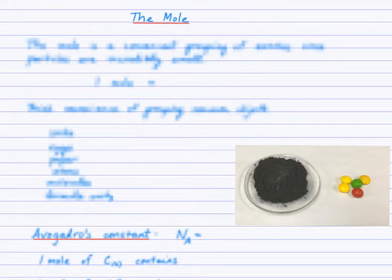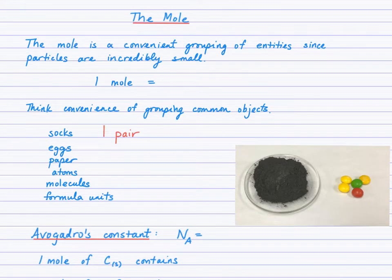If you think of socks, what's a convenient way that we group socks? Hopefully, you're thinking of a pair of socks. And the idea is that one pair of socks really means that there are two socks. If you had a pair of cufflinks or a pair of students, there would be two students. So, a pair means two. What about eggs? What's a convenient way that we group eggs? Sure, by the dozen. So, when you hear dozen, you think twelve. A dozen donuts, twelve donuts.